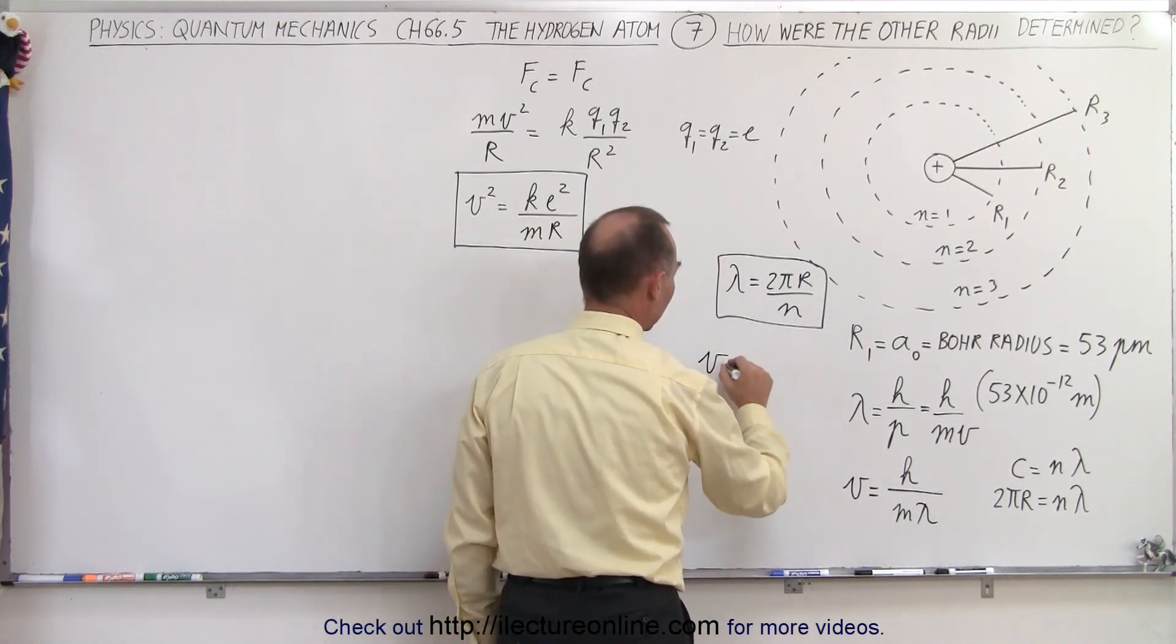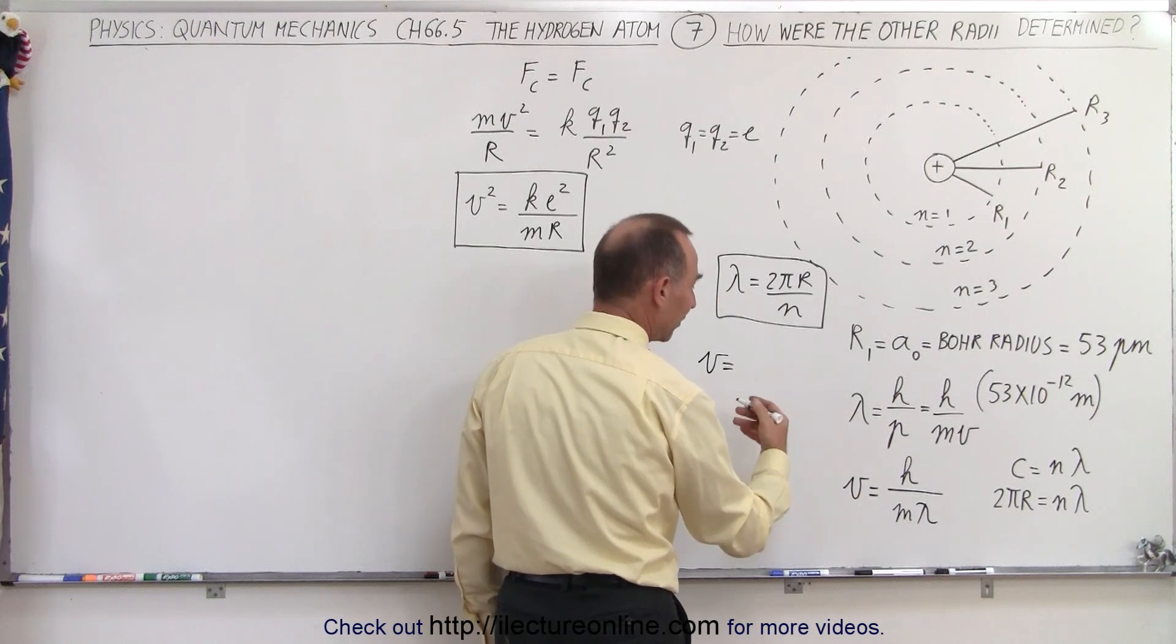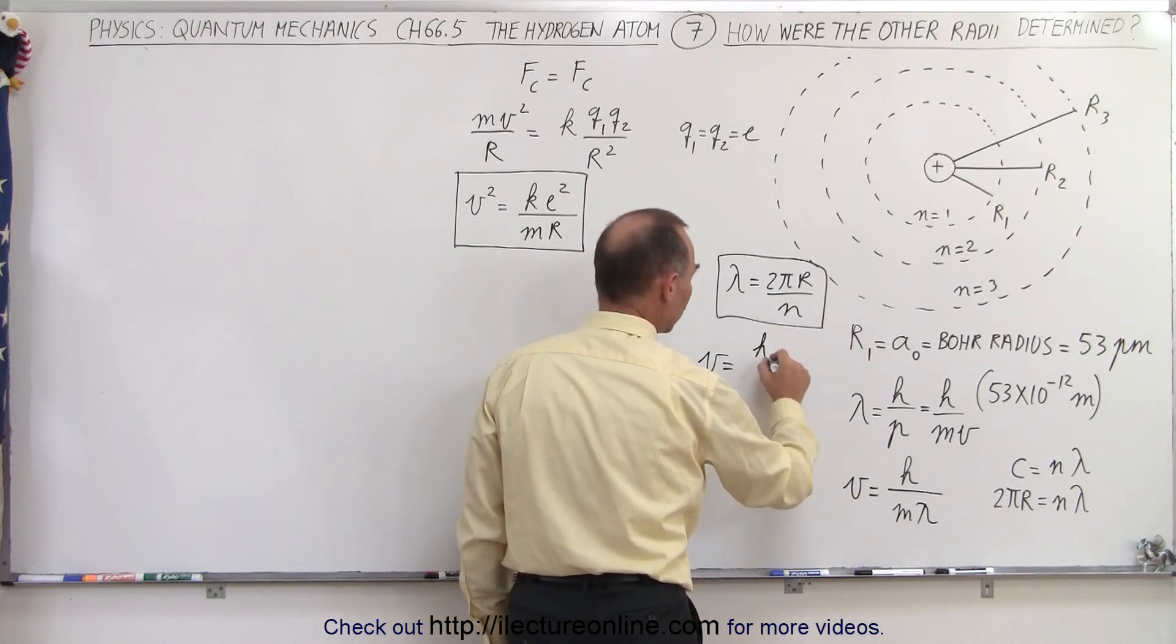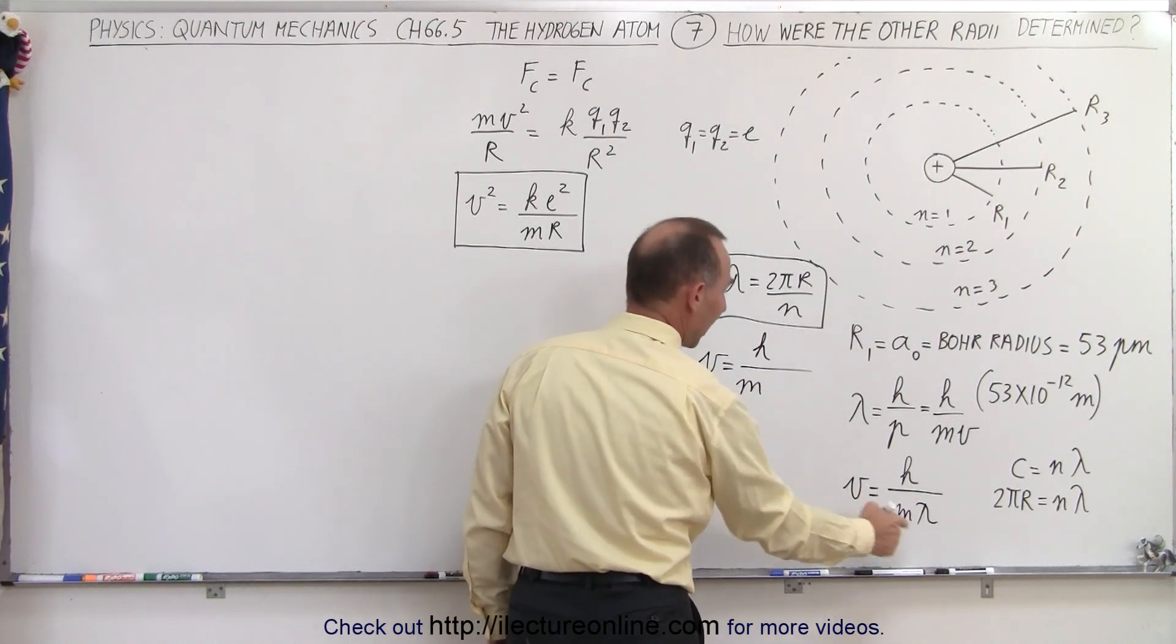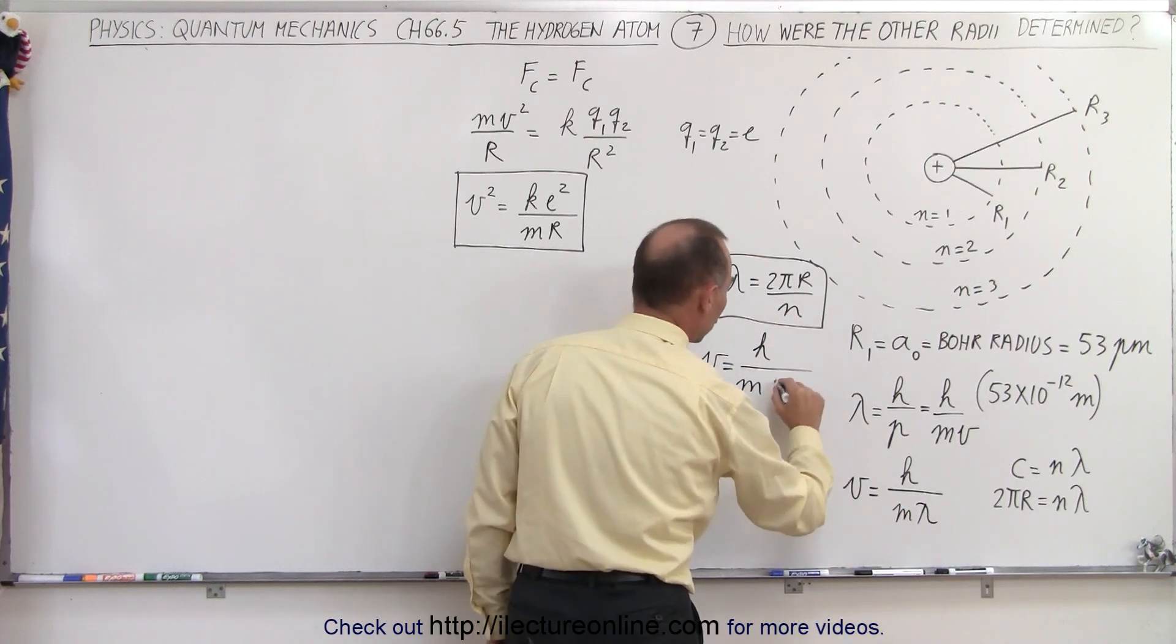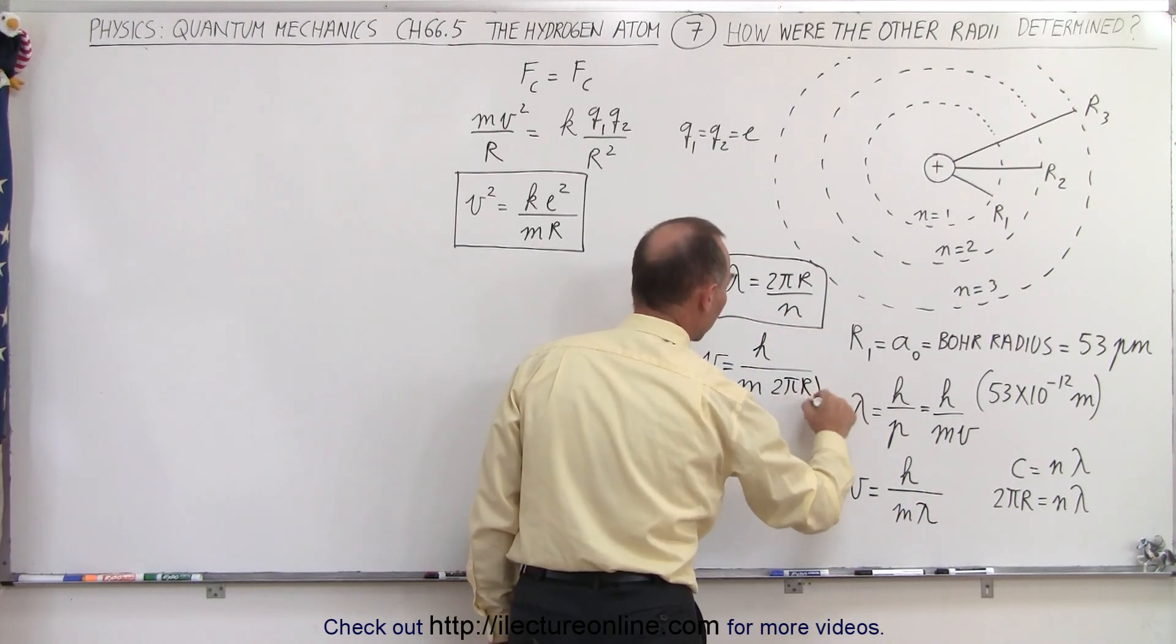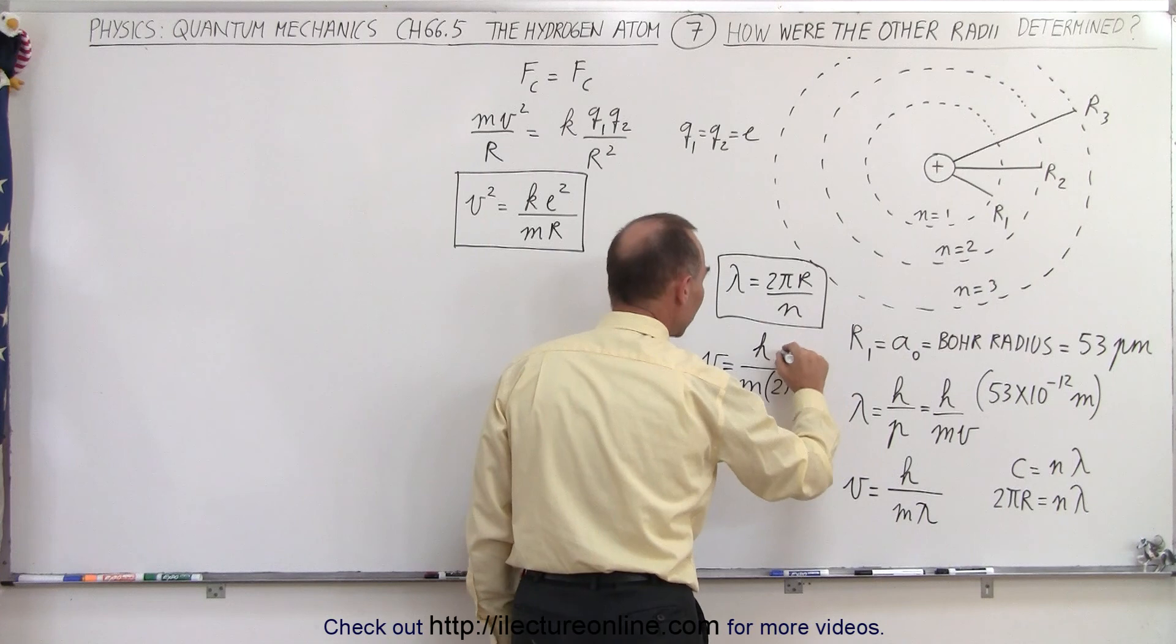So here we can see then that the velocity has to, by necessity, equal H divided by m times lambda, lambda being 2πr divided by n, so the n goes then to the numerator.